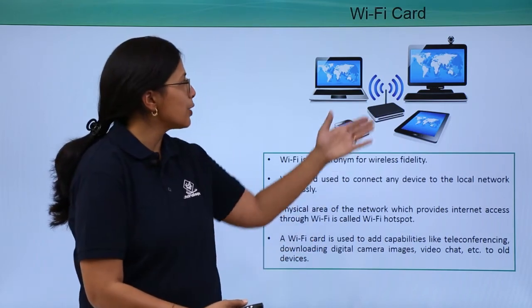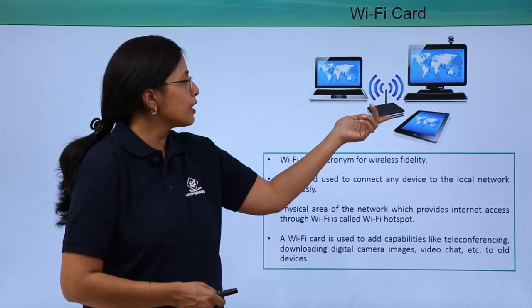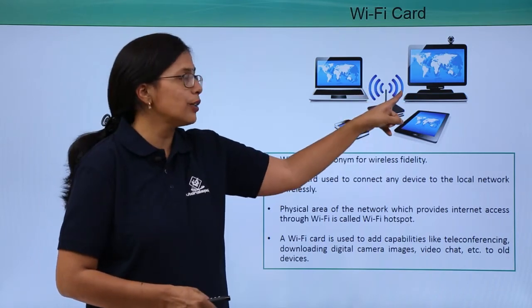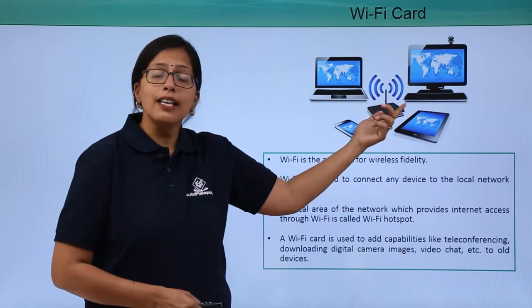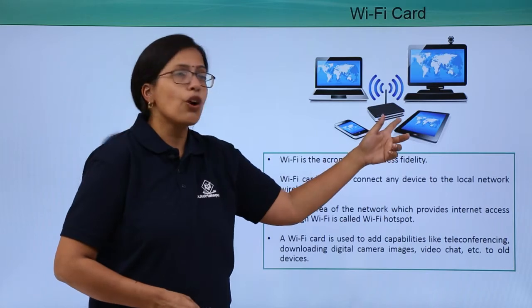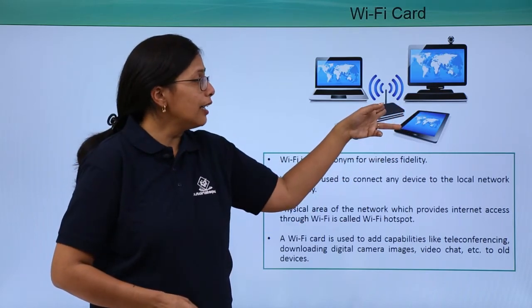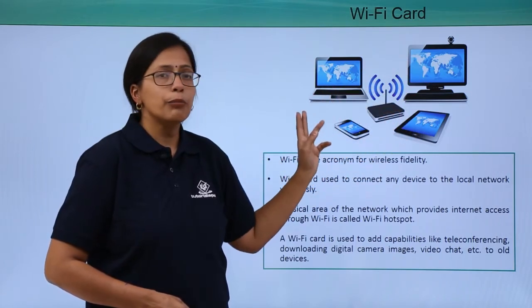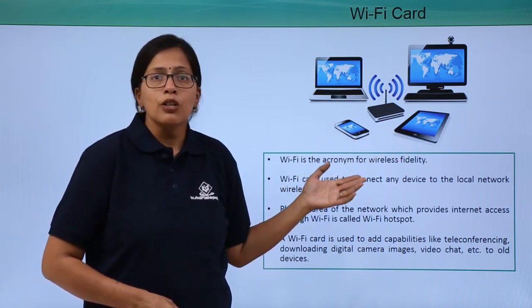As you can see in this figure, this is a computer network which is connected to the broadband modem here wirelessly. The sign that you see here is for wireless connection. This modem has the internet connection through a physical cable, which actually comes through a physical connection.